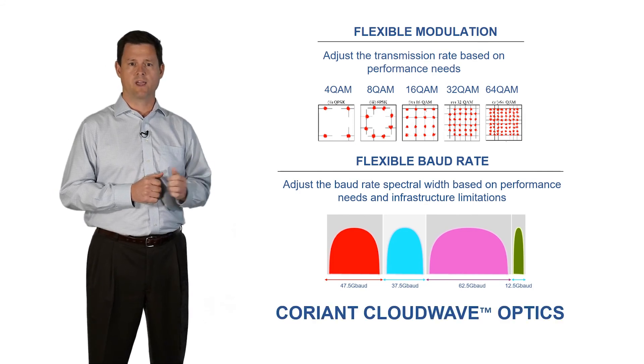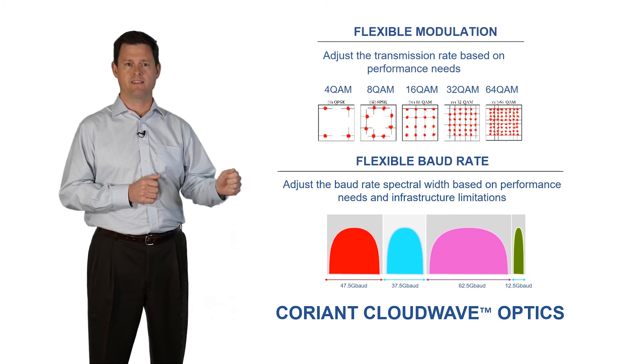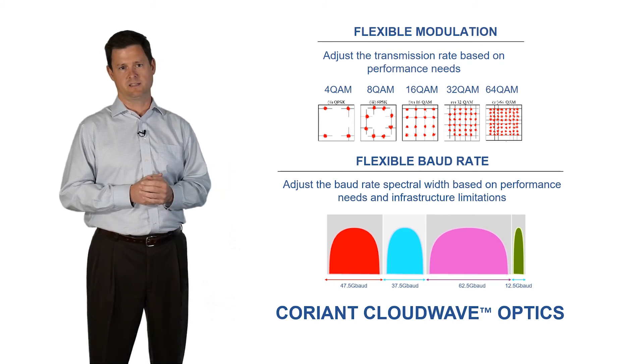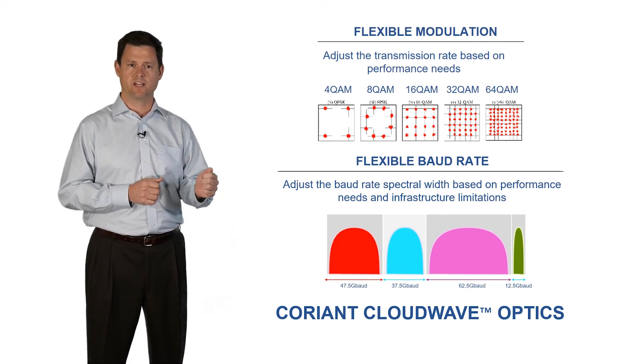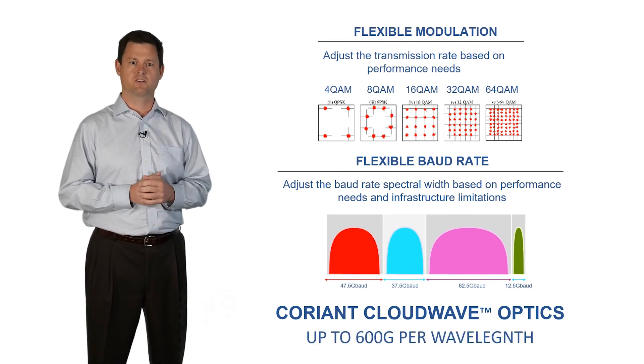Coriant's CloudWave Optics solution enables adjustments of both the modulation and the baud rate simultaneously. At the highest speed configuration, CloudWave Optics provides 600 gig single carrier wavelengths.